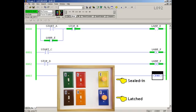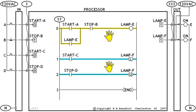One output is being held on by a seal-in rung. The other has been latched on. So far, these two programming approaches appear to be identical, but a big difference can show up whenever the PLC system enters the run mode.